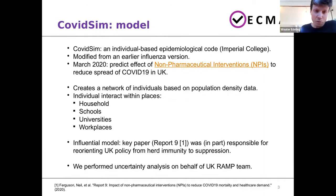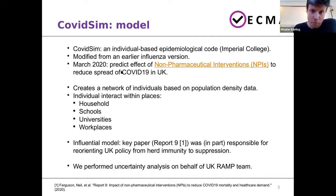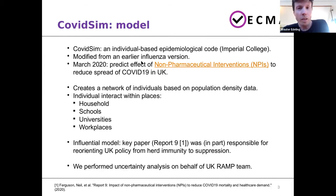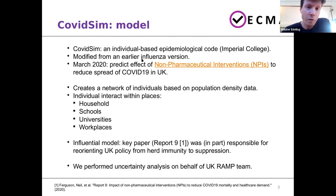I'm guessing a lot of you are actually in epidemiology, and I'm not an expert in this field. Just a general overview for those of you who are like me. COVID-SIM is an individual-based epidemiological code. It was developed at Imperial College in London, and it wasn't actually designed for COVID. It was modified from an earlier version that was used to predict influenza.